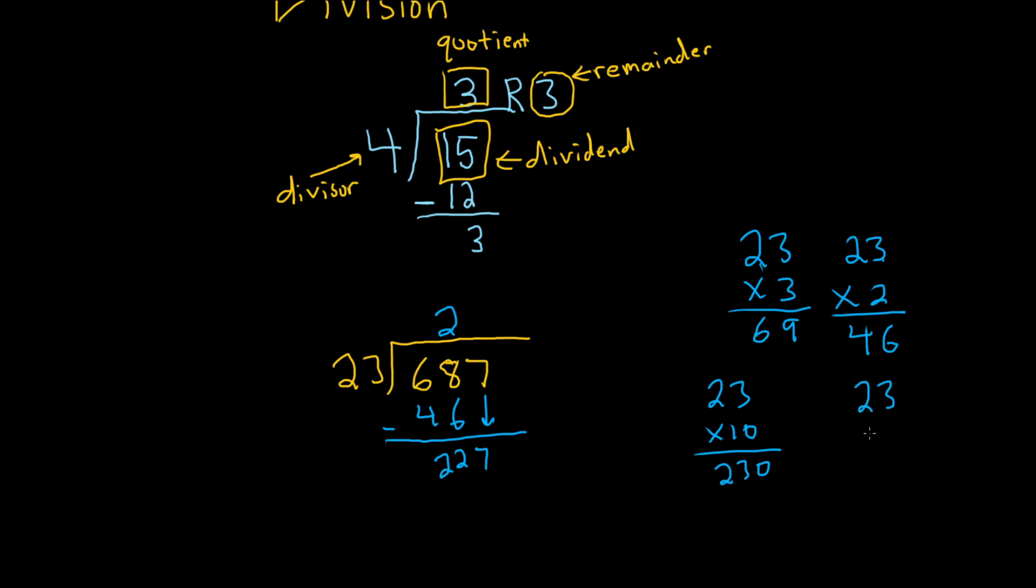So let's try 23 times 9. So let's see, 9 times 3 is 27. So we write down our 7 and carry the 2. 9 times 2 is 18. You add 2, you get 20. So 207.